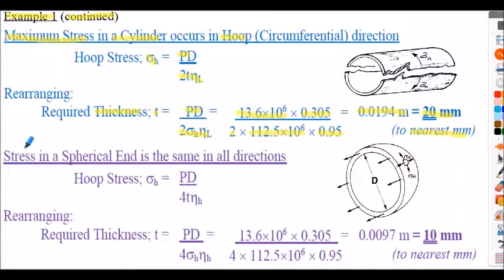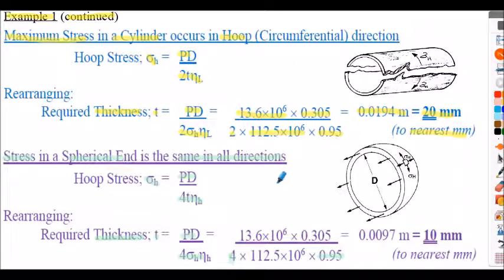For the spherical end, the maximum stress is the hoop stress defined as pd/(4t × η_H). Rearranging for t: t = pd/(4 × σ_h × η_H). With η_H = 0.95 and dividing by 4 instead of 2, this evaluates to 0.0097 m = 9.7 mm, so to the nearest millimetre that is 10 mm. Therefore: cylinder wall thickness = 20 mm, spherical end wall thickness = 10 mm.